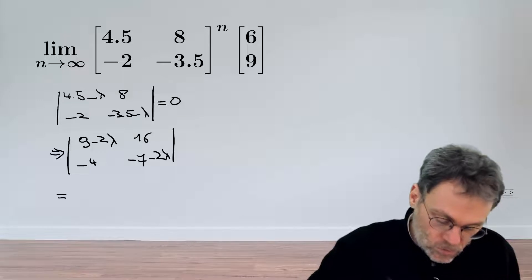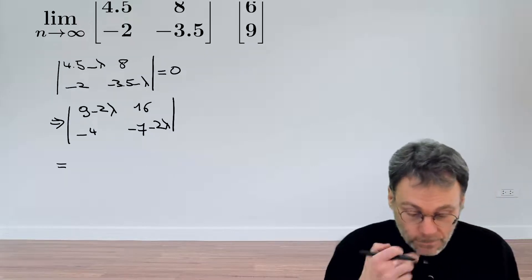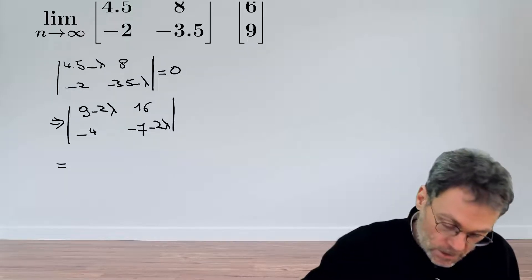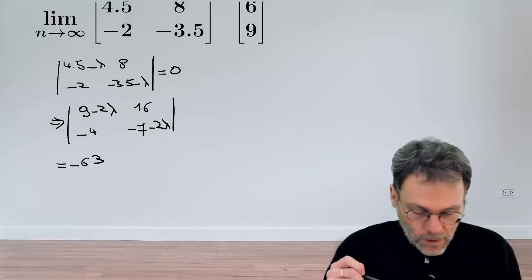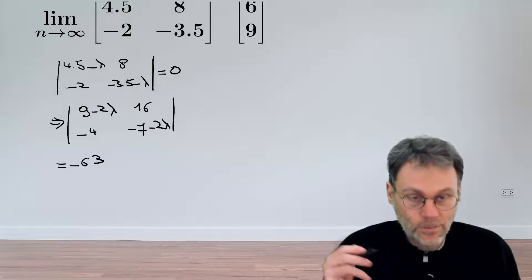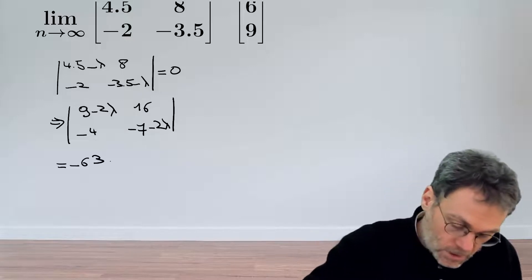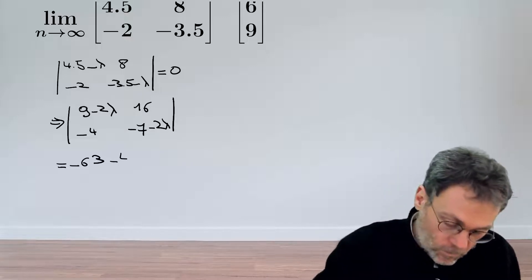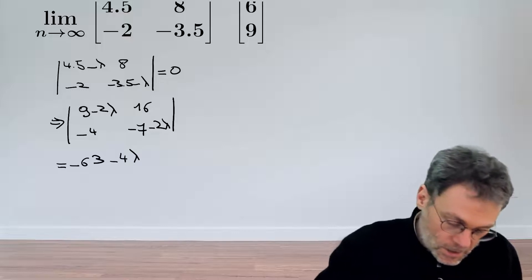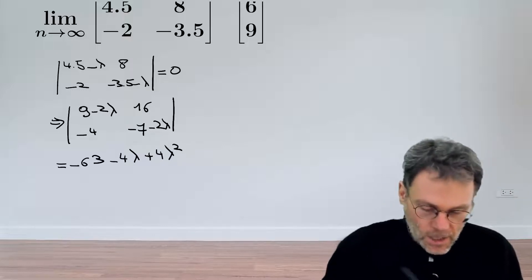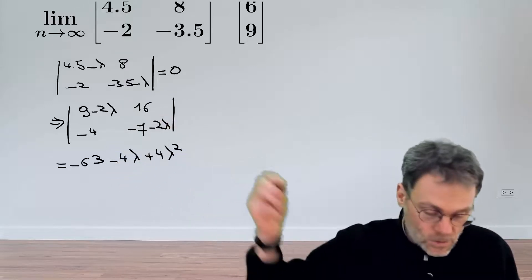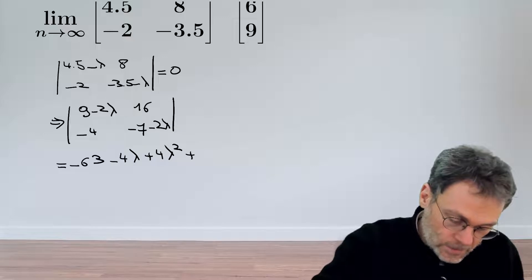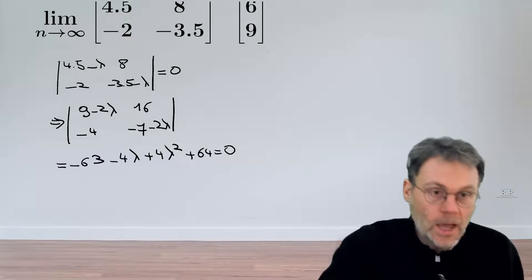So if we continue to evaluate the determinant, first thing is we get minus 63, and then we have minus 18 plus 2 times that plus 14, so that's going to give us minus 4λ plus 4λ squared, and then finally this product of these two guys with a minus sign gives us 64.